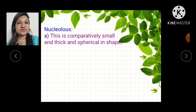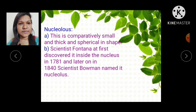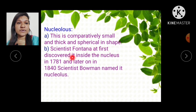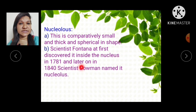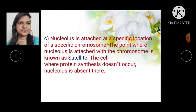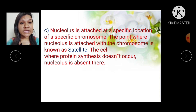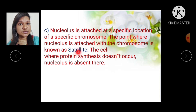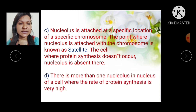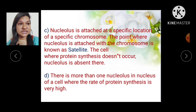The nucleolus is comparatively small, thick, and spherical in shape. Scientist Fontana first discovered it inside the nucleus in 1781, and later in 1840, scientist Bowman named it the nucleolus. The nucleolus is attached at a specific location of a specific chromosome. The point where the nucleolus is attached to the chromosome is known as the satellite. In cells where protein synthesis does not occur, the nucleolus is absent. There is more than one nucleolus in the nucleus of a cell when the rate of protein synthesis is very high.